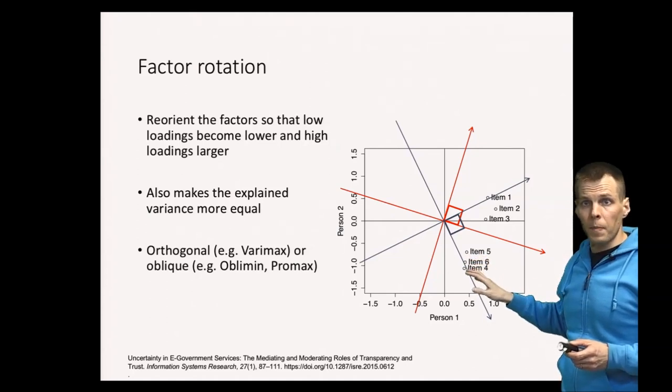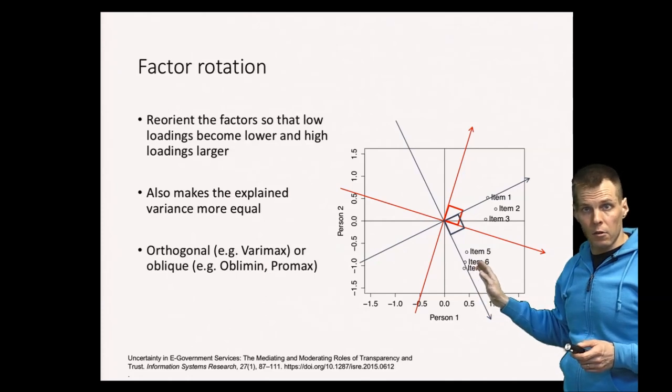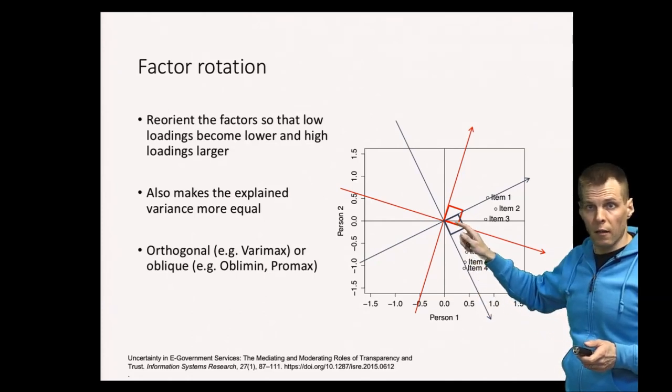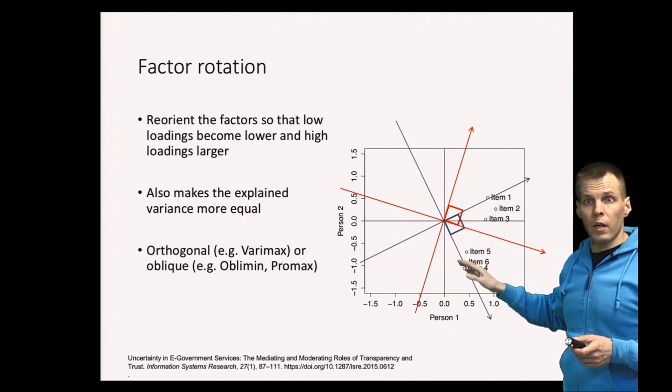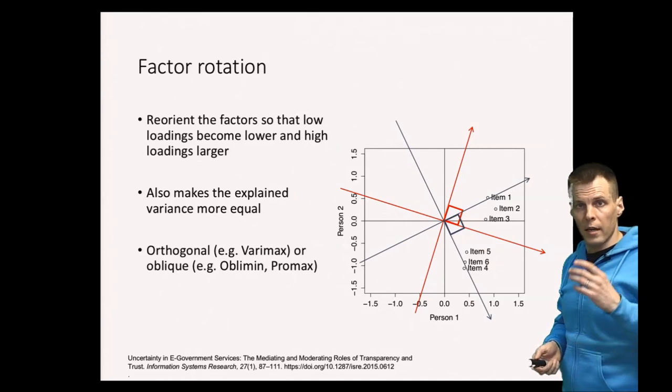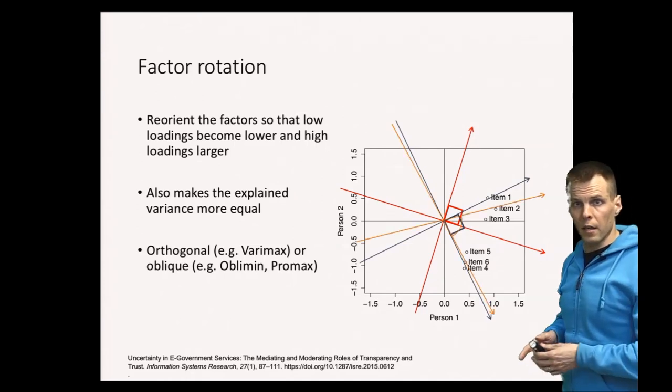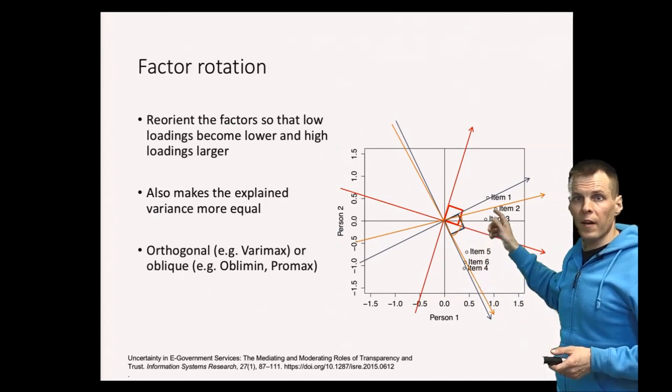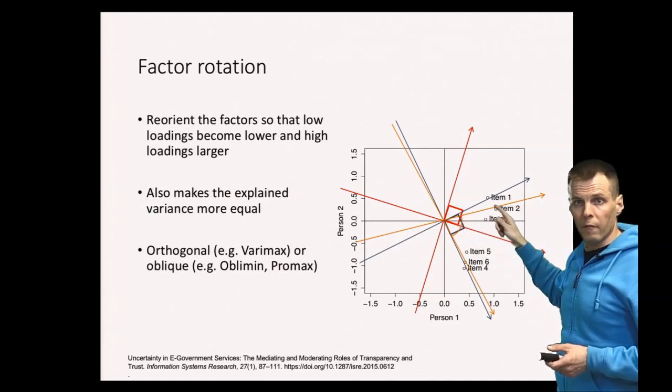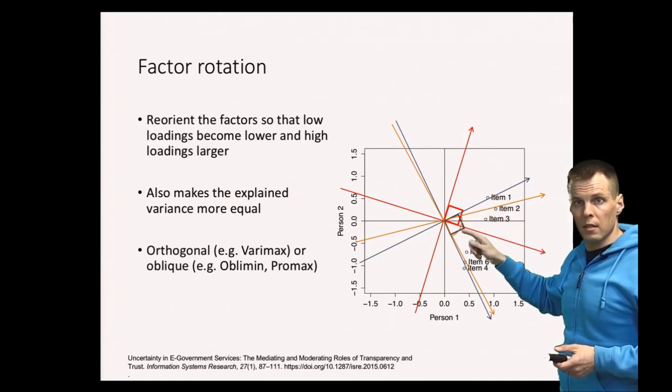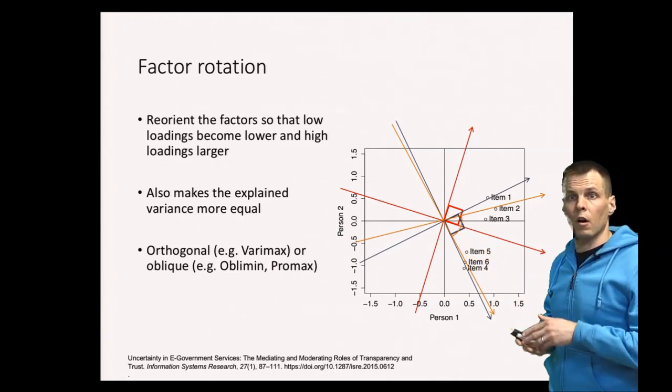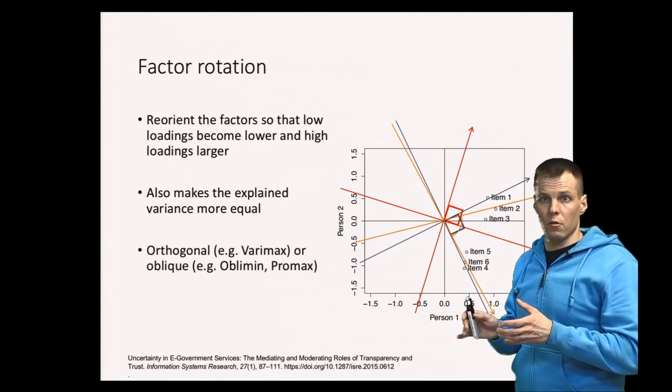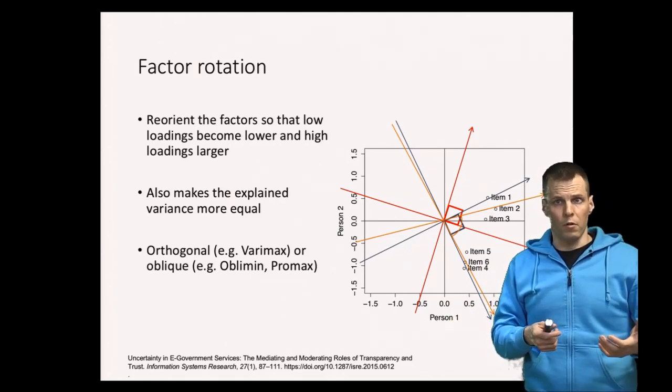But these factors still don't point exactly to where the items are because we are constraining that the factors must be uncorrelated. So this is a 90 degree angle. When we relax that assumption we can actually draw the lines so that the factors are correlated. When this factor is higher then this factor can be higher as well. And now the arrows point that the first three items are in this direction and the second three items are in that direction. And that's the idea of factor rotation. So you reorient the factor analysis to make it simpler to interpret.